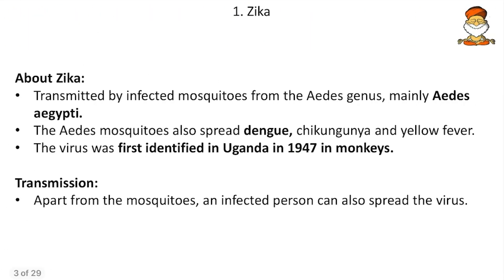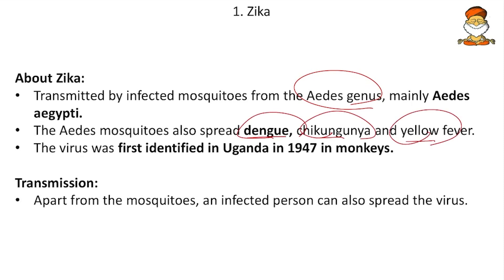First, the Zika virus. Zika is transmitted by infected mosquitoes from the Aedes genus, mainly the Aedes aegypti mosquitoes. The Aedes mosquitoes also spread dengue, chikungunya and yellow fever — mark these as important facts. The virus was first identified in Uganda in 1947 in monkeys, so monkeys were the first hosts.